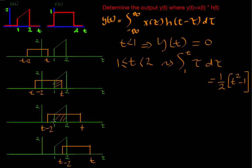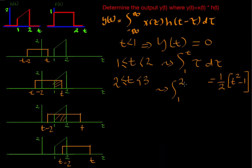In the next case, we can see that we have overlapping from one to two. When t is greater than or equal to two and less than three, we integrate from one to two: the integral of tau d-tau gives us three over two.